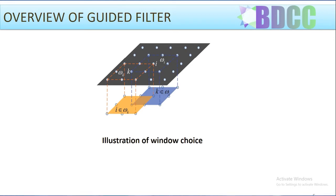Smoothing is performed by the guided filter by taking statistical features of a pixel's neighborhood into account. It computes output in the same way as a linear time-invariant (LTI) filter, but utilizes another picture as a guide. This extra picture might be the original or a translated version of the original, or an entirely different picture. Guided filter, like other edge-preserving filters, can maintain edge information throughout the decomposition process, which aids in the prevention of ringing artifacts.